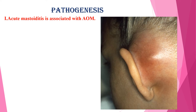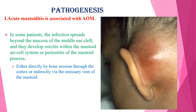Acute mastoiditis is always associated with acute otitis media. In some patients, the infection spreads beyond the mucosa of the middle ear cleft, and they develop osteitis within the mastoid air cells or periostitis of the mastoid process, either directly by bone erosion through the cortex, or indirectly via the emissary veins of the mastoid.